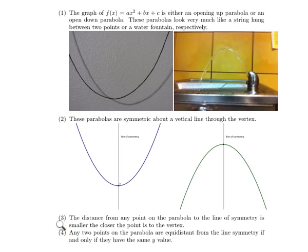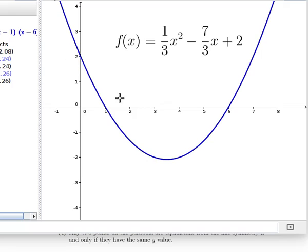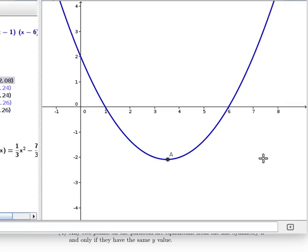These other two properties will be listed in the handout. Let's look at them in a little more detail. We'll use as our example this particular quadratic function. Here's the vertex of the function and there's the line of symmetry.